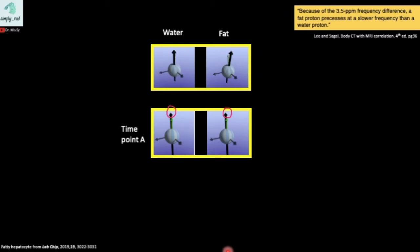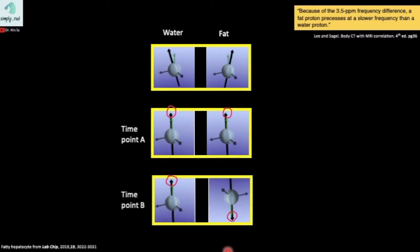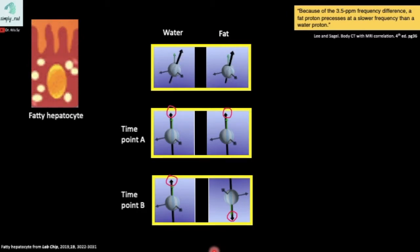If we take a picture again, this time at time point B, when they are out-of-phase with each other, there will be a signal drop. This signal drop will happen only if both the water and fat protons occupy the same voxel, as in this case, microscopic fat within the fatty hepatocyte.